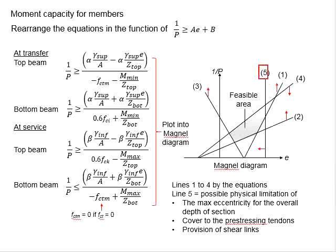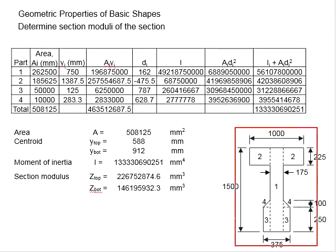There is a fifth line here. It is normally used to represent the possible physical limitations, such as the maximum eccentricity for the overall depth of section, which can be governed by the minimum cover for the prestressing tendon, or due to the provisions of the shear link.